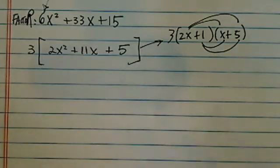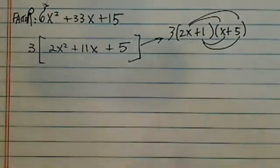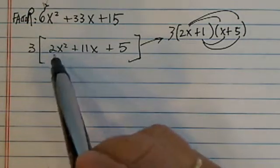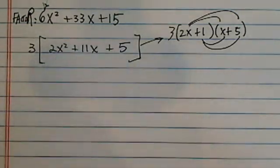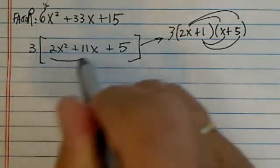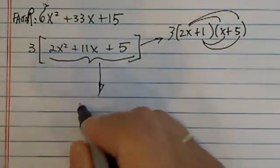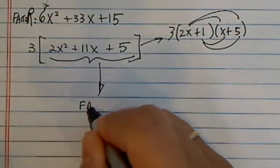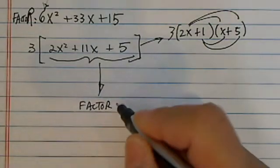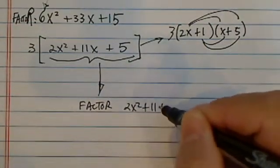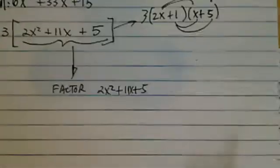If you don't, what I want to do is give you a process on how to do this one in the long run. So no matter what coefficient your teacher gives you, even if it's not a simple one, you can still do it. So what I want to do is just grab this one down here and factor it, because the rest of the stuff is pretty easy. Factor 2x squared plus 11x plus 5.